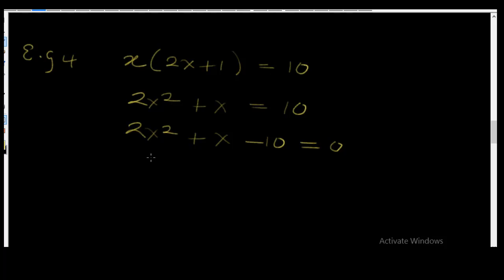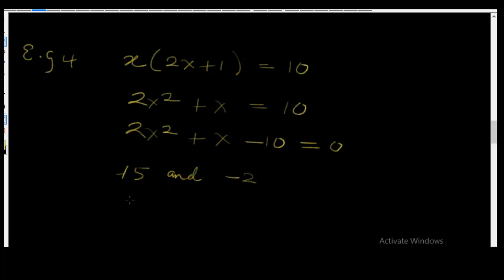This is a special equation. The general rule of finding two numbers whose product is -10 and whose sum is +1 may not apply here, because x² has a coefficient of 2. So here we're going to be testing out numbers until we find the factors. The numbers that will fit this factorization are +5 and -2.